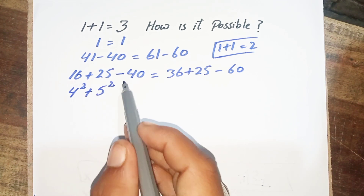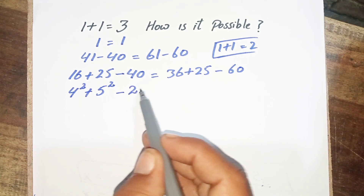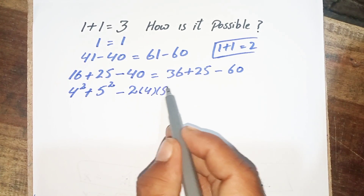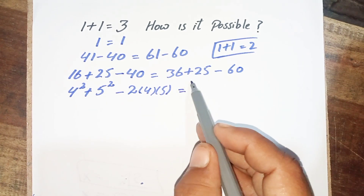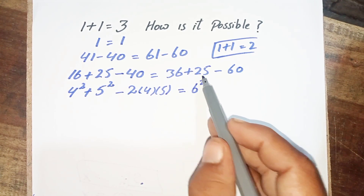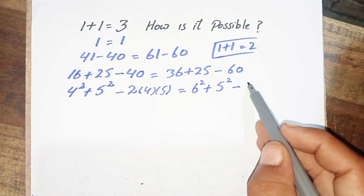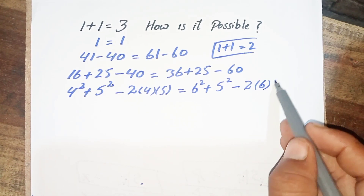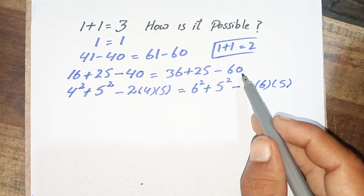Now students, I can write this 16 as 4 squared, and this 25 will be equal to 5 squared, and this 40 we can write as 2 multiplied by 4 multiplied by 5. On the right side, 36 is equal to 6 squared, plus 25 equal to 5 squared, minus 60 written as 2 multiplied by 6 multiplied by 5. When we multiply these three numbers the result is 60.